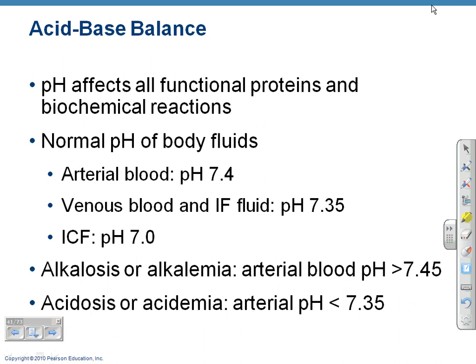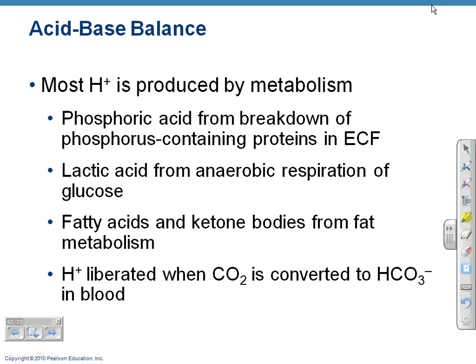Arterial blood is around 7.4. Anything below 7.35 is considered acidosis; anything above 7.45 is alkalosis. Venous blood and interstitial fluid are around 7.35, and intracellular fluid inside the cell is about 7.0. Most hydrogen ions are what cause us to move between acidity and basicity — hydrogen ions are acidic constituents, and the more hydrogen ions present, the more acidic conditions become.